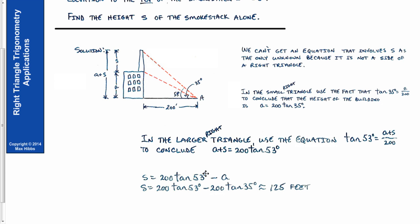Now I calculate s by subtracting a from both sides: s = 200 × tan(53°) − a. Since a = 200 × tan(35°), substituting gives s = 200 × tan(53°) − 200 × tan(35°). That's simply the difference of those two tangent calculations — now it's just a calculator issue.